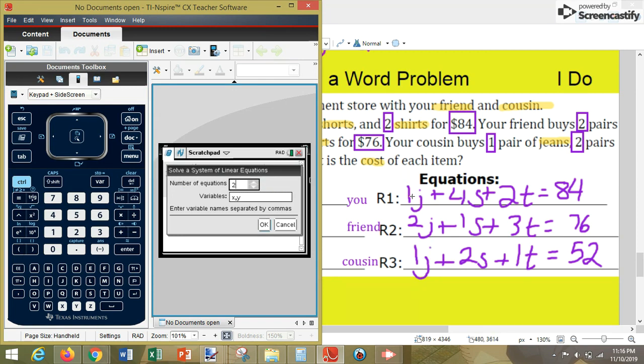In this one, there are three equations. So, instead of two, we're going to put three. And that will be X, Y, and Z. We're putting J, S, and T. So, let's go ahead and change these letters to J, S, and T. But again, you can put any letters you want here.